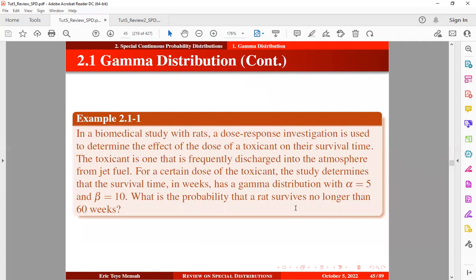Alright, so let's take an example. In a biomedical study with rats, a dose response investigation is used to determine the effects of the dose of a toxicant on the survival time. The toxicant is one that is frequently discharged into the atmosphere from jet fuel. For a certain dose of the toxicant, the study determines that the survival time in weeks has a gamma distribution with alpha equal to 5 and beta equal to 10. What is the probability that a rat survives no longer than 60 weeks?